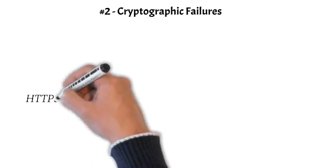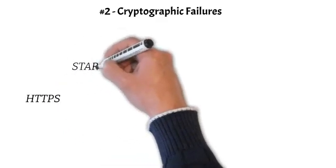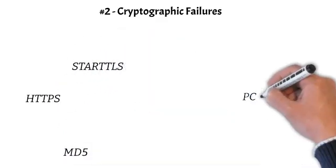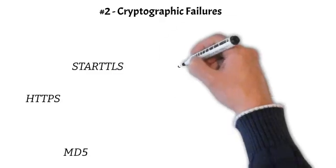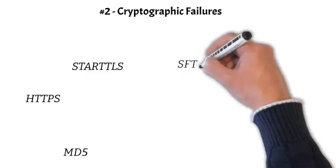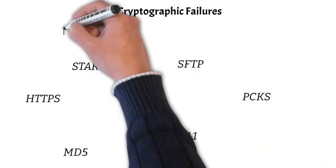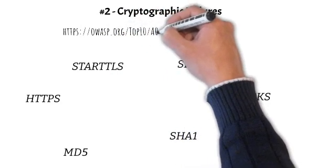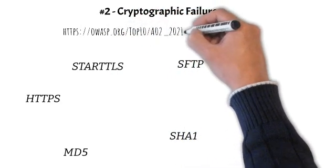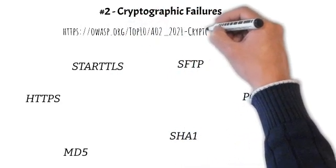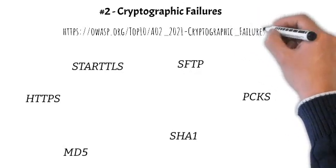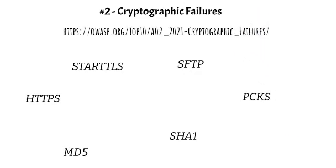Number 2: Cryptographic Failures. Shifts up one position to number 2, previously known as sensitive data exposure, which was a broad symptom rather than a root cause. The renewed focus here is on failures related to cryptography, which often leads to sensitive data exposure or system compromise.